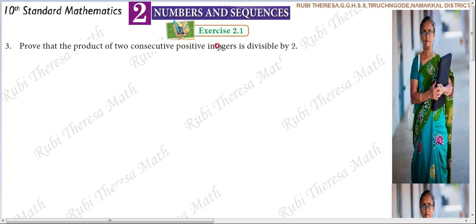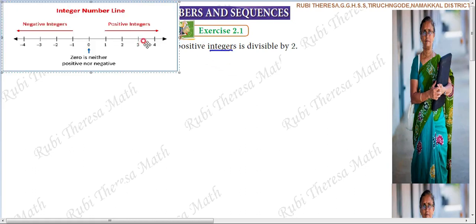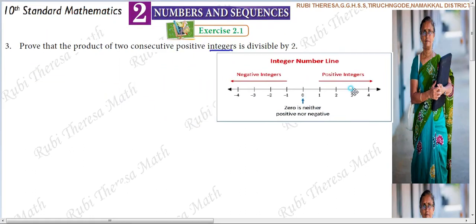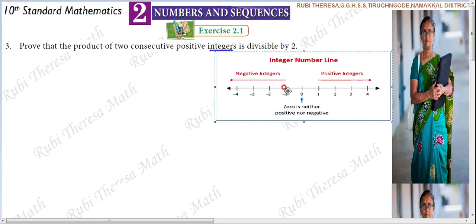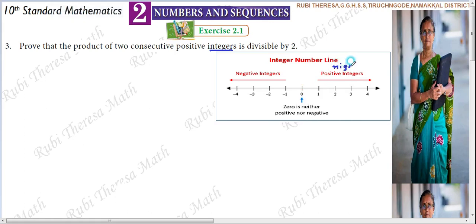First, what are integers? So let's see an example for understanding. Negative integers and positive integers — zero is a number on the number line. Zero's right side numbers are called positive integers, and zero's left side numbers are negative integers. Both positive and negative natural numbers comprise integers.